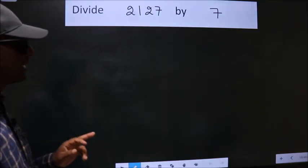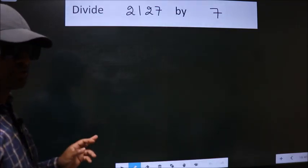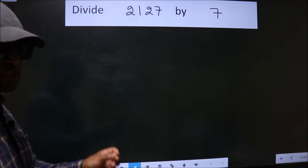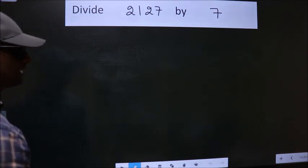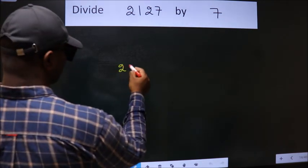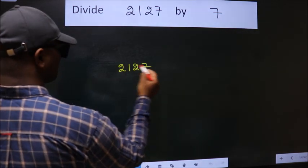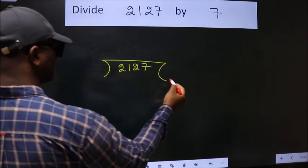Divide 2127 by 7. To do this division we should frame it in this way: 2127 here, 7 here.